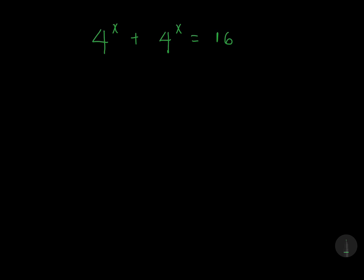Hello guys, today we have this equation and we're going to try to solve it. Notice that we have 4 to the power x and 4 to the power x, which means we can take out a common factor of 4 to the power x.